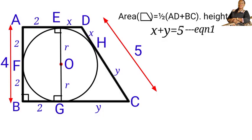Now, let us add them together. Line AD equals x plus 2, and line BC equals y plus 2.